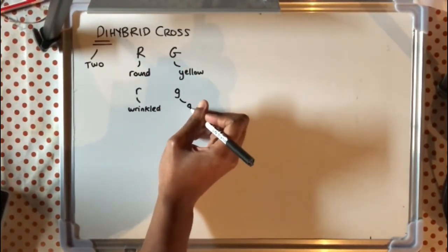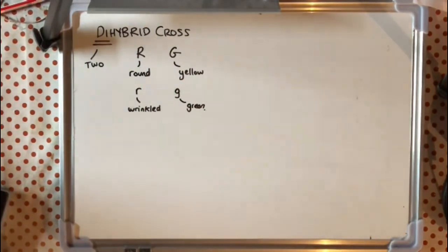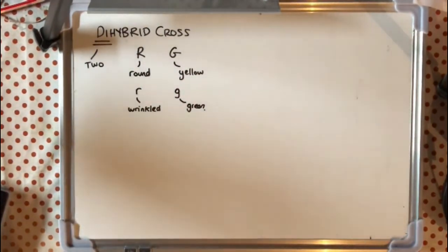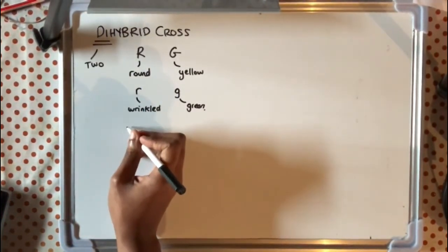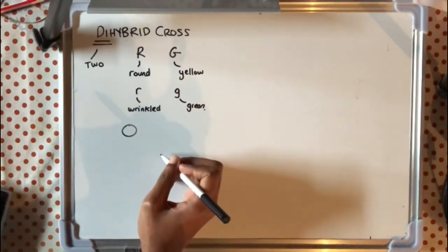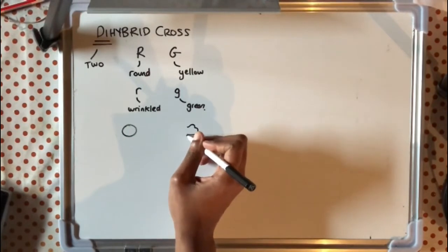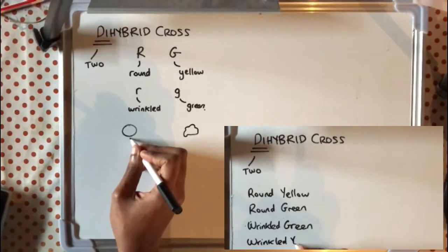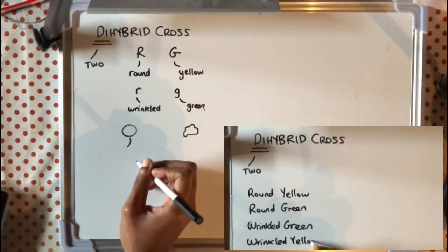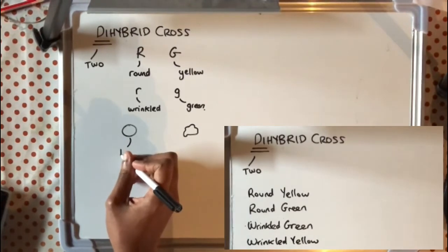The perfect example is Mendel and his pea plants. What he noticed is that he was getting a variety of different phenotypes — some with a round shape, some with a wrinkled shape, some with a yellow colour, and some with a green colour. You can figure out from those different possibilities that there are 4 potential phenotypes: wrinkled yellow, wrinkled green, round yellow, and round green.